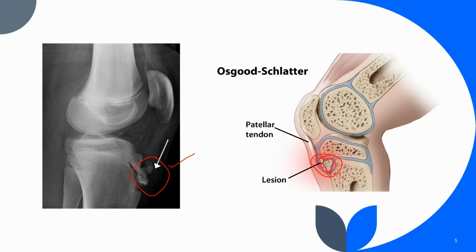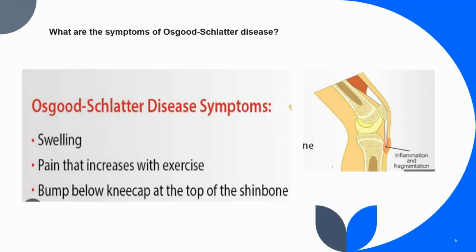Now let's talk about the clinical features — the signs and symptoms of Osgood-Schlatter disease. Common symptoms include knee and leg pain, swelling, tenderness, increased warmth under the knee and over the shin bone, and pain that gets worse with exercise or high-impact activity such as running and limping after physical activity. The severity varies from person to person; some experience only mild pain, others constant pain. Discomfort can last from a week to several years, and symptoms typically go away once the growth spurt of adolescence is finished.